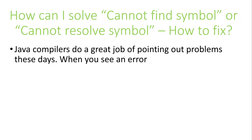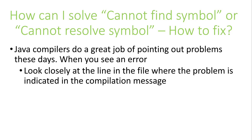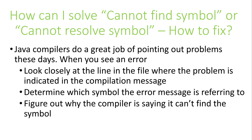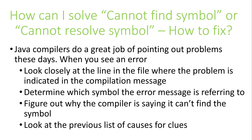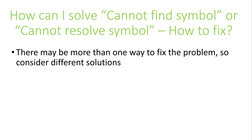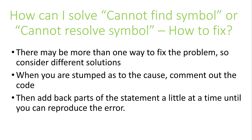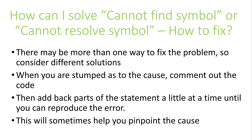So how do you solve the problem? Java compilers do a great job of pointing out problems, and there's often help in the IDE that will give you some guidance on how to fix the problem, but other times it can be misleading or downright unhelpful. The best advice is to look at the line where the problem is indicated, try to determine the symbol that's causing an error message to appear, and figure out why the compiler might not be able to resolve the symbol. Look through the prior list of issues we discussed to see if any seem like a likely cause. There may be more than one way to resolve the problem, so be creative. If you're stumped, comment out the lines of code where the problem is reported, then add back the statement a little at a time until you can reproduce the error. This careful review can sometimes help you identify the cause.